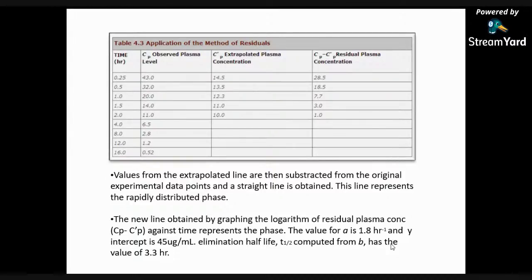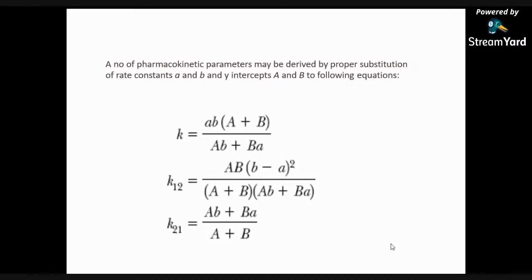A number of pharmacokinetic parameters may be derived by proper substitution of rate constants α and β and y-intercepts A and B into the following equations. The overall elimination rate constant k = (Aβ + Bα) / (A + B). The transfer rate constant k₁₂ from the first compartment to the second compartment is: k₁₂ = (Aβ + Bα) / (A + B). And the rate constant k₂₁ from the second compartment back to the first is also derived from these terms.